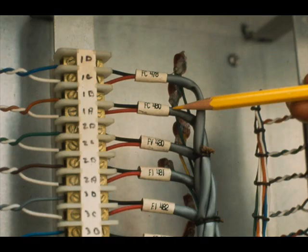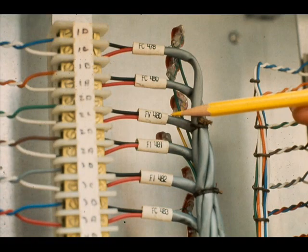A given control loop normally requires two wires to carry the signal from the transmitter to the control center and two wires to bring the signal from the control center to the I to P transducer at the control valve.